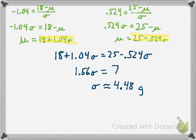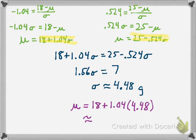Then we find the mean by plugging the standard deviation into either of the two equations. Using the equation where everything's positive — mu equals 18 plus 1.04 sigma — and remembering to use the more accurate stored values, we get about 22.6 grams as the mean. So you've seen how to use cumulative probabilities in a normal distribution to find the mean and standard deviation, sometimes both in the same problem. That's our chapter on normal distributions and random variables altogether. Thanks for all your hard work in the chapter — hope this has been a really useful resource for you.